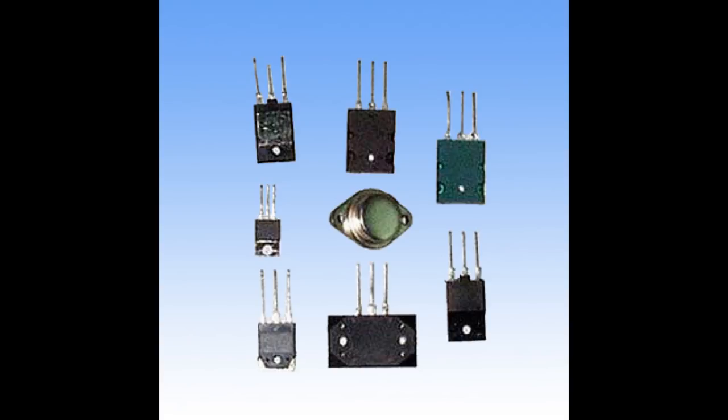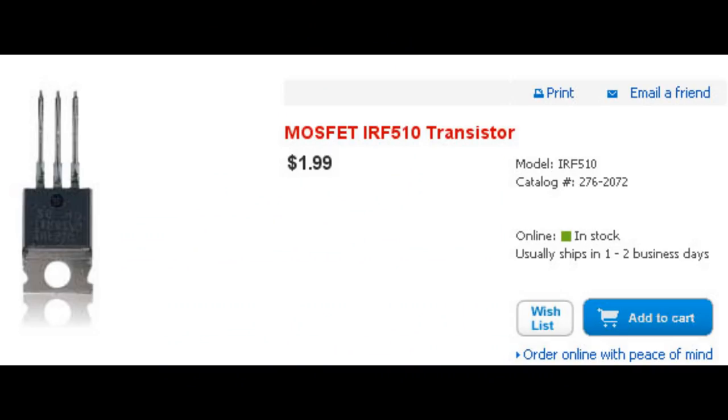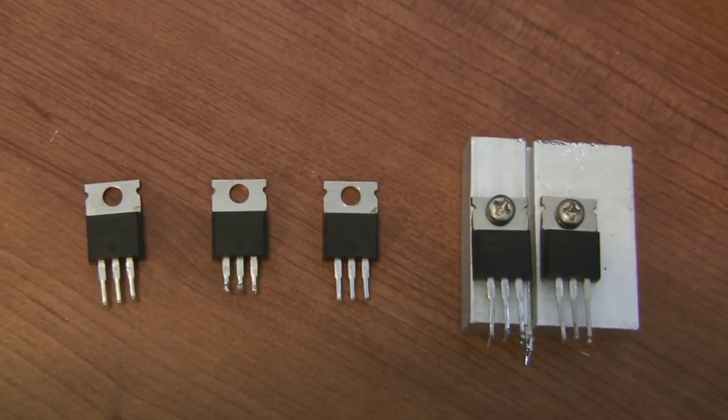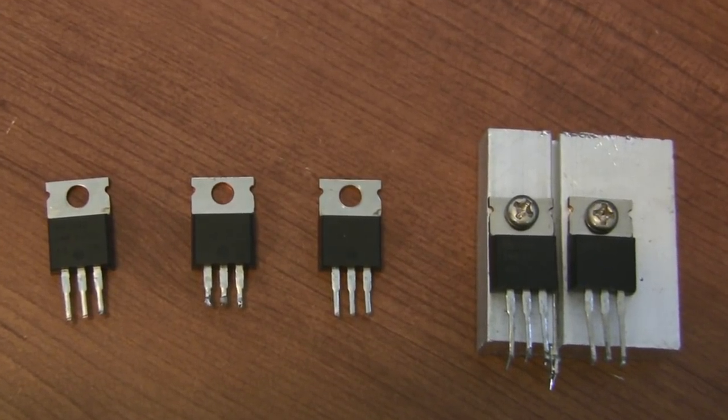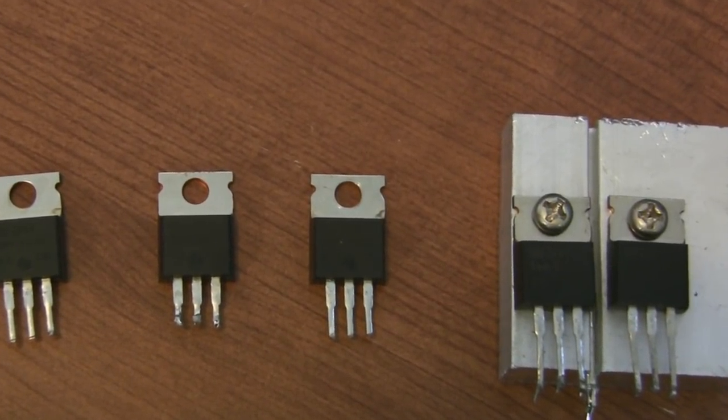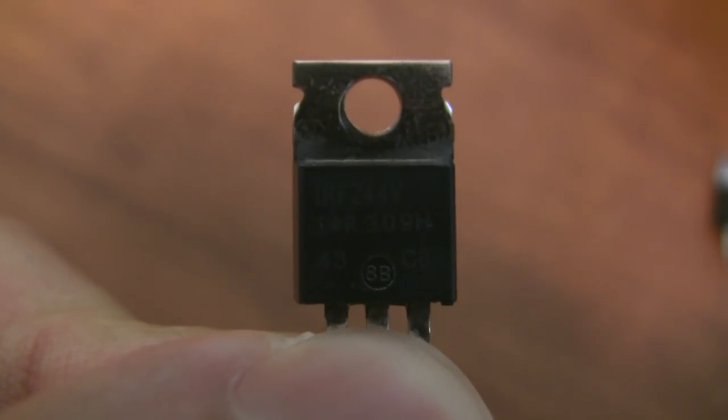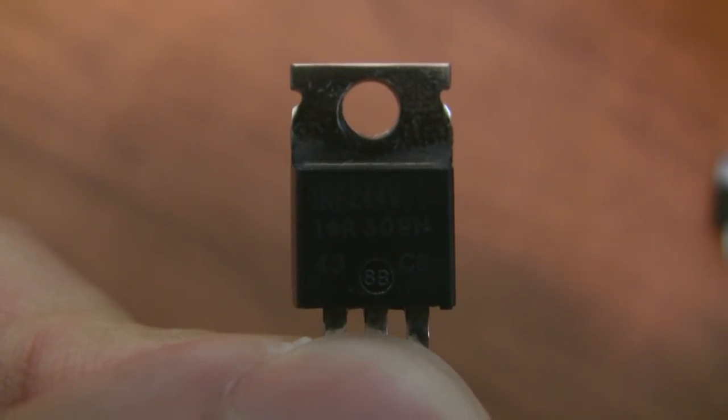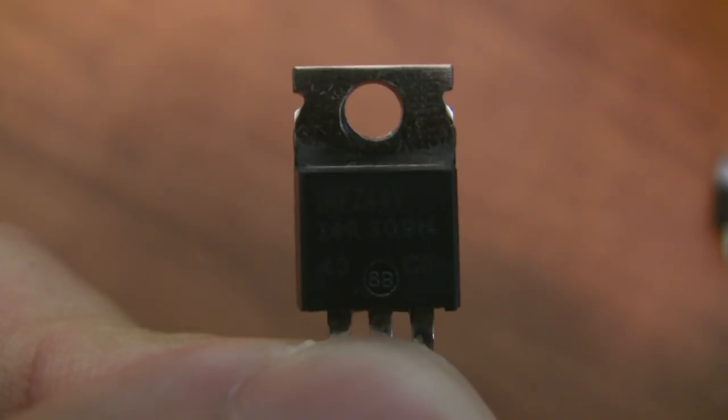So where can you get an N-channel MOSFET? Well, there are many different types of N-channel MOSFETs, but they all work in pretty much the same way. You can get an N-channel MOSFET from Radio Shack, or you can scavenge them from old computer hardware. They usually look like this. Google the part number on the transistor to double check exactly what you're working with. Here I have an IRF-Z44.